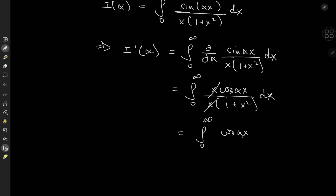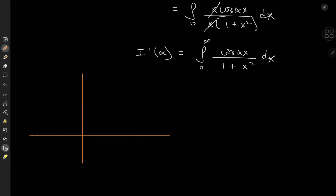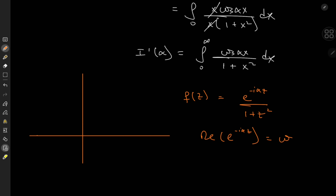We can solve this using differentiation under the integral sign again, or we can make it an epic collaboration — applying contour integration. We'll define our complex-valued function f of z as e to the i alpha z over 1 plus z squared. The rationale is that the real part of e to the i alpha z is cosine of alpha z, which returns the numerator we need.